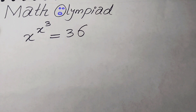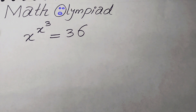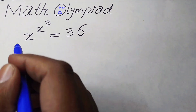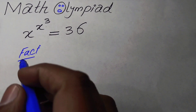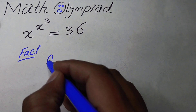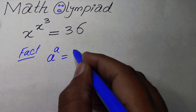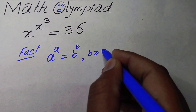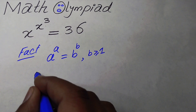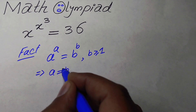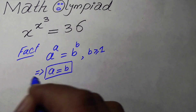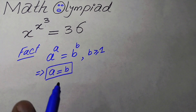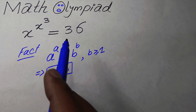Hello everyone, welcome back to the Map of Mathematics. In this video we are going to solve a nice exponential equation and find the value of x. The key fact we will use is: if a to the power of a equals b to the power of b, and b is greater than or equal to 1, then a equals b.